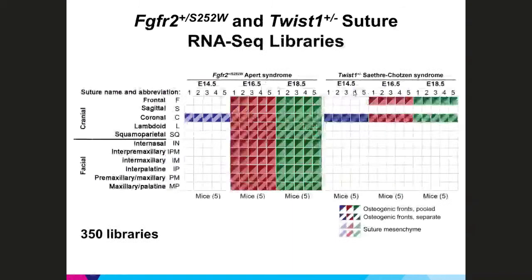This chart similarly summarizes the total number of RNA-seq libraries for the mutant FGF receptor 2 and TWIST1 sutures. For the FGF receptor 2 Apert mutant we're doing all the same sutures as for the wild type, as other sutures could be affected during this embryonic period. We also include two sutures affected in the TWIST1 model: the frontal suture, which is wider than wild type, and the coronal suture, which fuses due to craniosynostosis. This gives a total of 350 RNA-seq libraries.